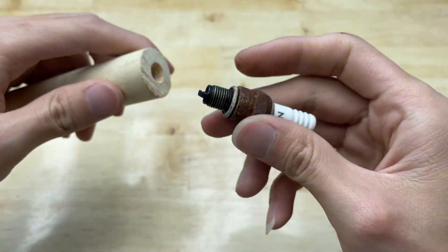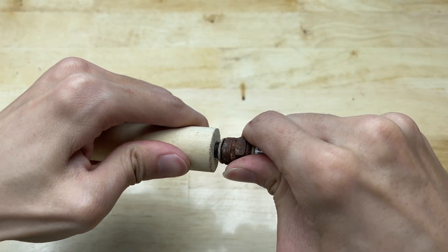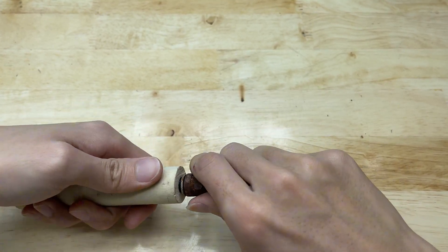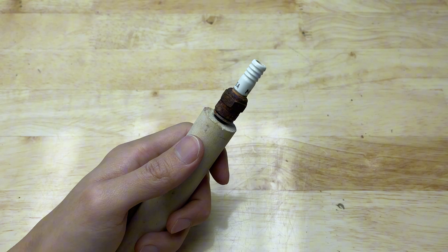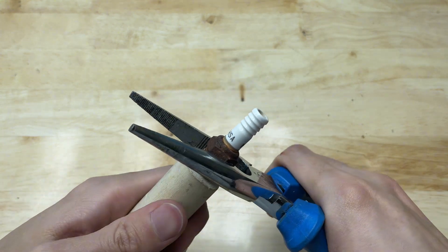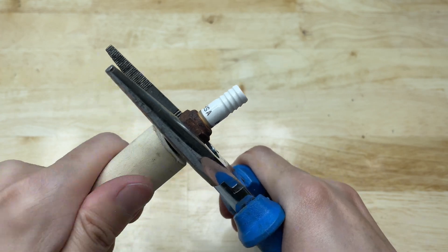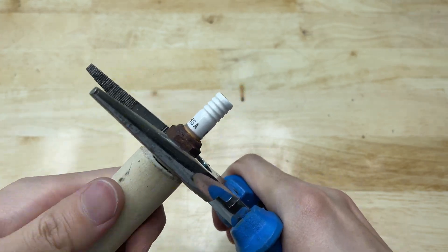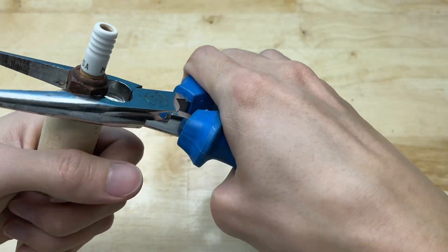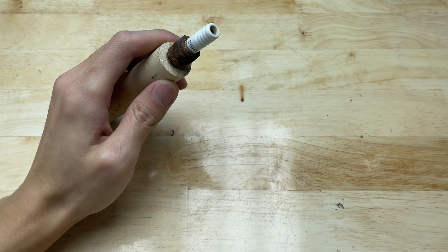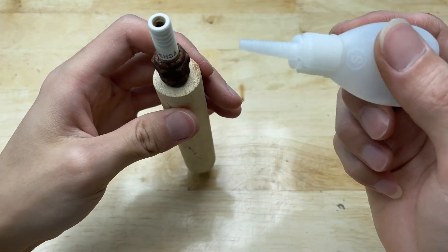Attach the spark plug to the piece of wood. Use pliers to tighten it securely. Use super glue to secure it in place.